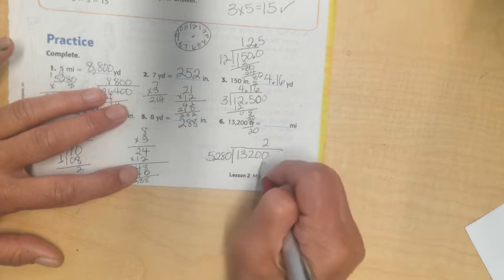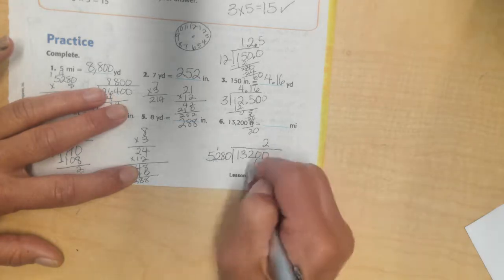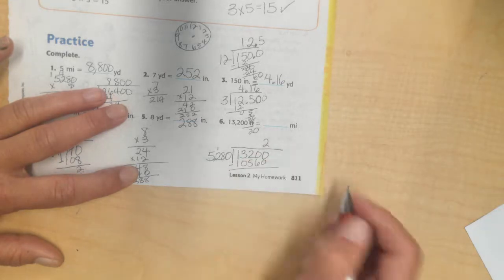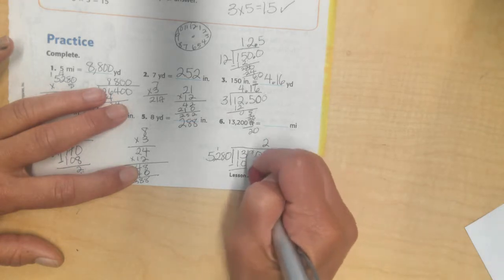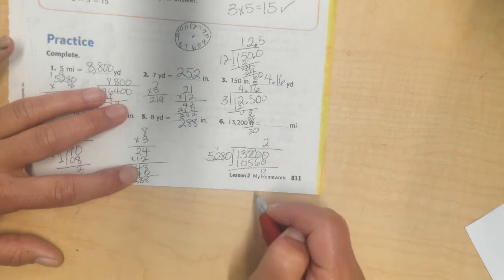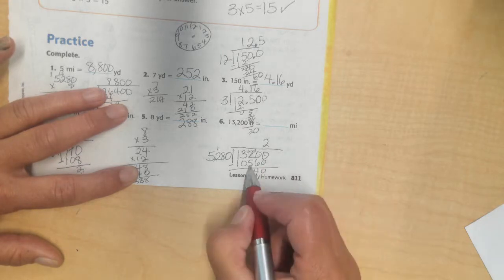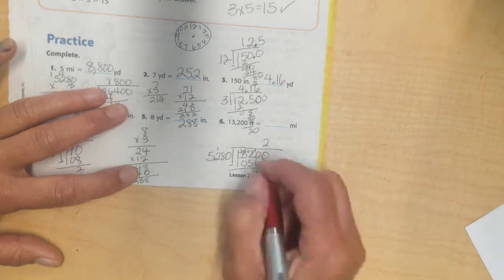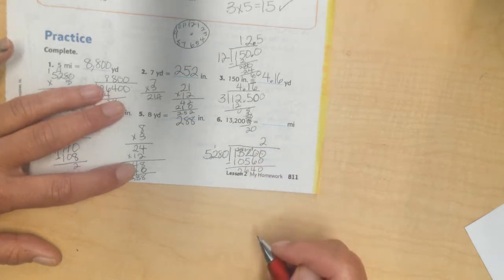I'm going to say 2 times 0 is 0. 2 times 8 is 16. Carry my 1. 2 times 2 is 4 plus 1 is 5. And 2 times 5 is 10. I will subtract. 0 take away 0 is 0. I can't take away 6 from 0. So, I'm going to borrow and turn that into a 10. Now, this is a 1. 10 take away 6 is 4. I need 5. Take it away from the 1. I can't do it. So, I'll borrow from this 3. Turn my 3 into a 2. Now I have 11. 11 take away 5 is 6. And 2 take away 0 is 2. So, I have 2,640.